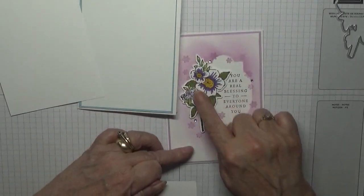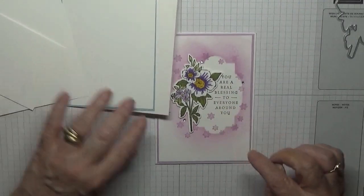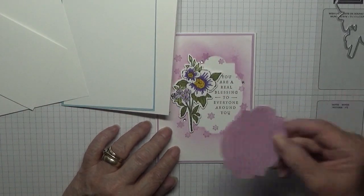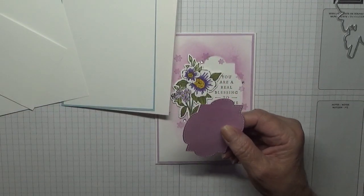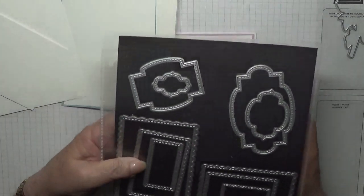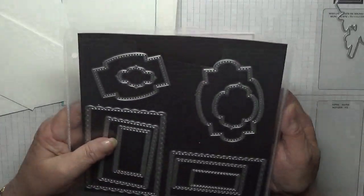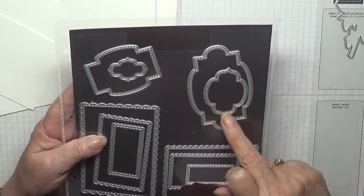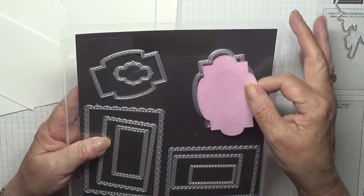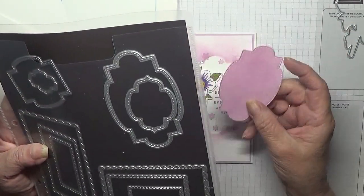I've got a piece of scrap for the flower. This shape is cut out with I think these are called Stitched So Sweetly dies. I used that big die there and that is where that shape comes from.